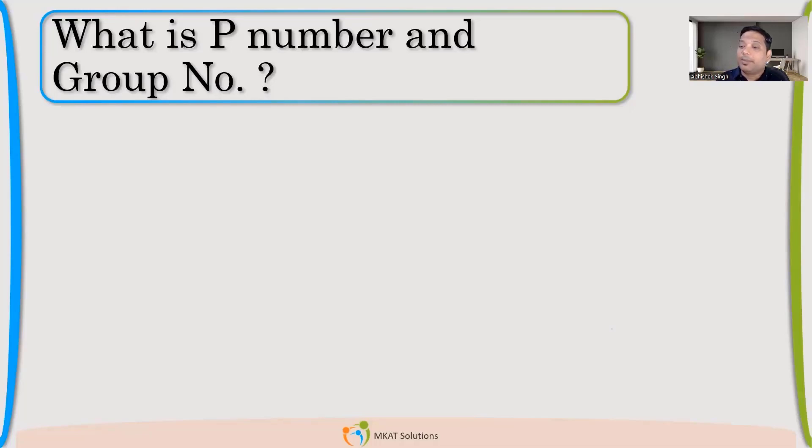Is it making sense? For P number, I will come to group number. So P number is clear. Why we have P number? Just say yes in the chat box if you are clear with that. Adnan is saying yes. Yes, great. Now, now the question.